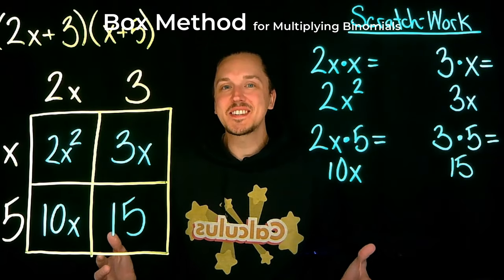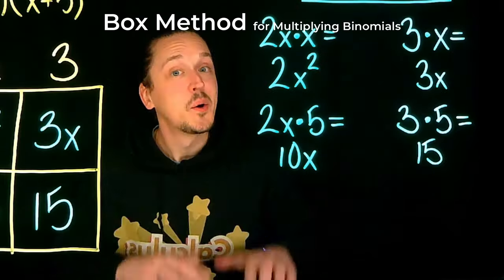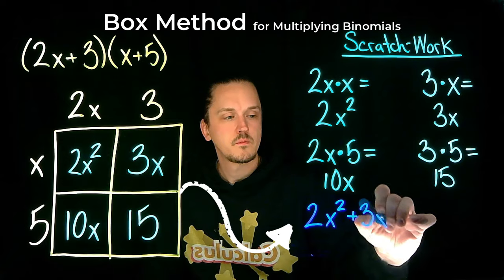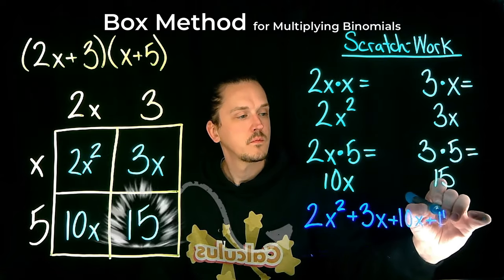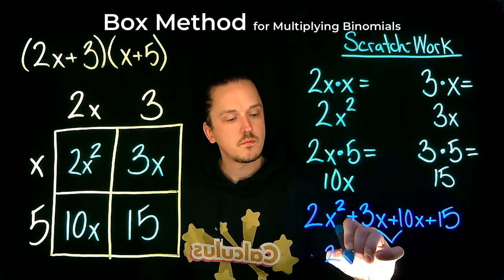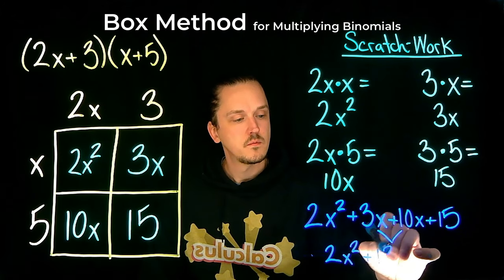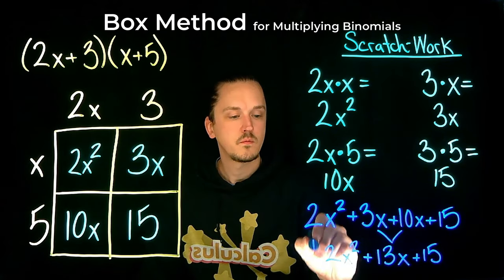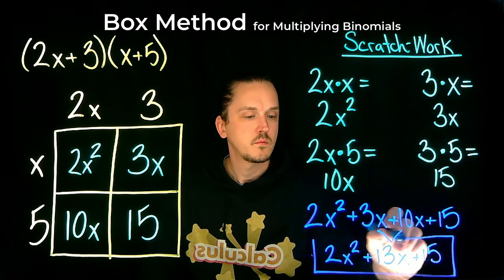Now that we've filled all the boxes, we simply combine these four terms and simplify. 2x², 3x, 10x, and 15. Since 3x + 10x is 13x, our final simplified polynomial is 2x² + 13x + 15.